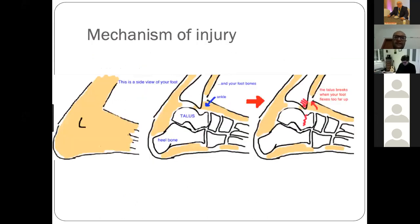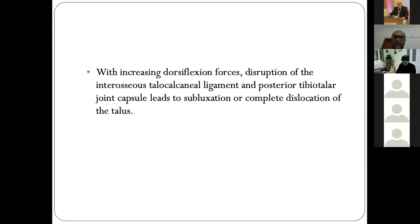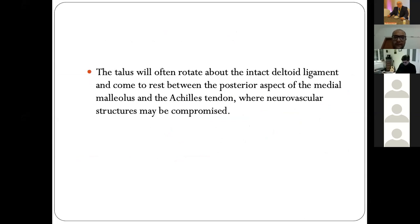The mechanism of injury: when the foot is in a dorsiflexed position and dorsiflexion continues to increase, the tibial margin hits the talar neck. With increasing dorsiflexion forces, there is disruption of the interosseous talocalcaneal ligament and the posterior tibial joint capsule, leading to subluxation or complete dislocation of the talus. The talus often rotates about the intact deltoid ligament and comes to rest between the posterior aspect of the medial malleolus and the Achilles tendon, where neurovascular structures can be compromised.